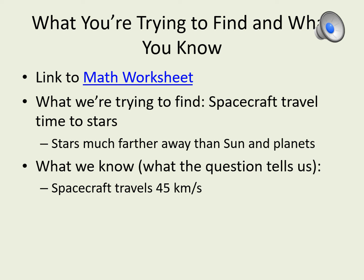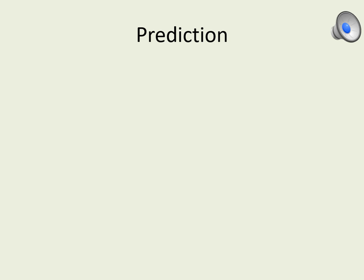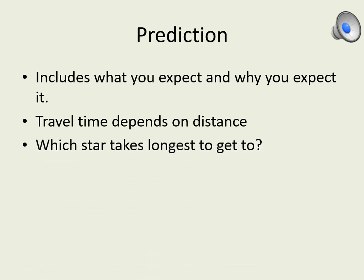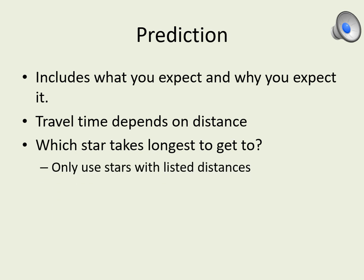Write down the spacecraft speed and don't forget to include the units. Next we do the prediction. Remember that there are two parts to any prediction: what you predicted and why. The why is important because without that it's not really a prediction — it's just a wild guess. The time it takes a spacecraft to travel from our Sun to any given star will depend upon how far away that star is. So you should look at the distance column in your constellation table and decide which star should take the longest to travel to. Note that only a few stars have distances listed, so you only need to worry about those. When you write down which star you expect, also say why you picked it.